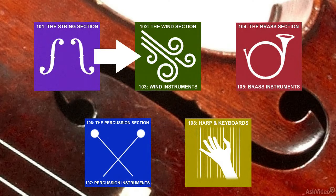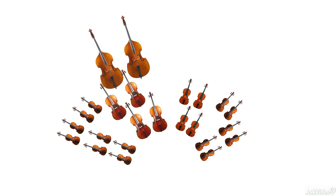Why follow our study of strings with wind instruments? The reasons have to do with reducibility, relationships, and the history of the orchestra. As we discovered in Orchestration 101, the strings are the basic building block of the orchestra. In order to say that an orchestra has been assembled, the general assumption is that a string section makes up its core.